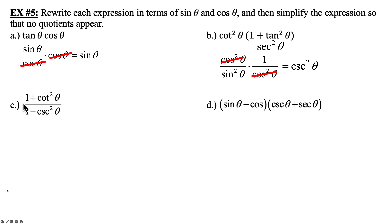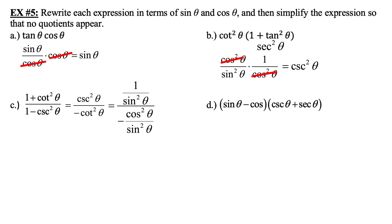Part C: again, 1s and squared trig functions — think Pythagorean identities. 1 plus cotangent squared theta is cosecant squared theta. 1 minus cosecant squared theta equals negative cotangent squared theta. Convert to sines and cosines: 1 over sine squared theta over negative cosine squared over sine squared theta. Cancel the sine squareds, leaving 1 over negative cosine squared theta, which is the reciprocal identity for negative secant squared theta.